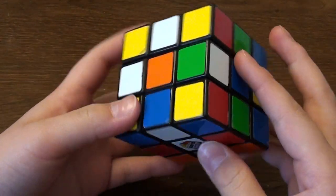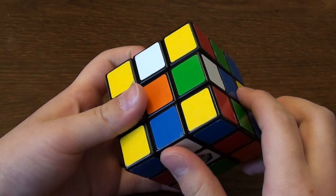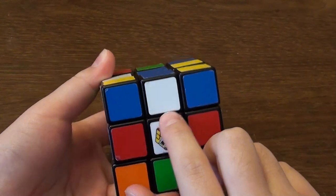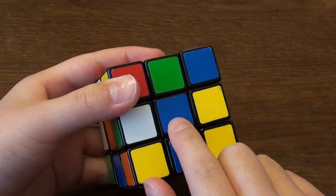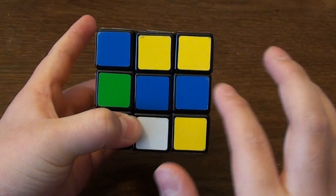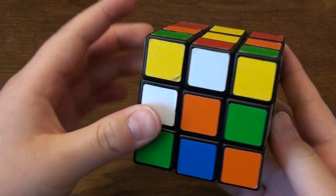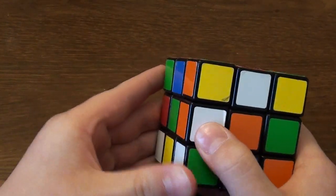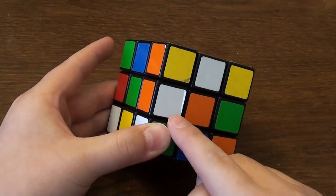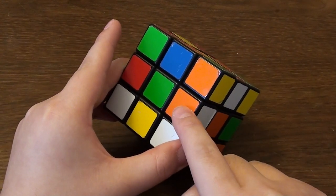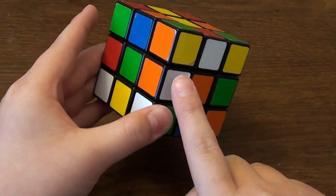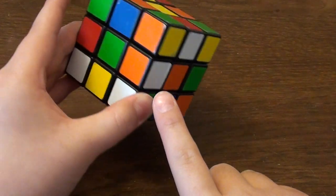So this is a scrambled cube as you can see. We already have a piece of the cross done with two of the same colors. This is what we want. I see one over here, and over here, and over here. Let's start with this one. This one over here is orange, so we have to put it over here. The white edge is gonna be over here and the orange will be over here.